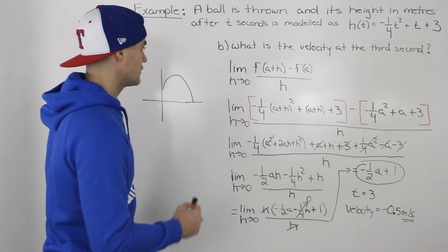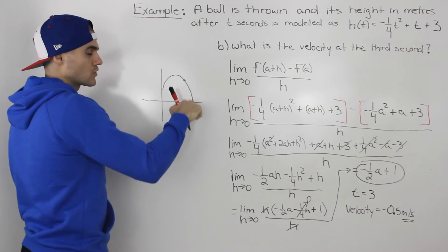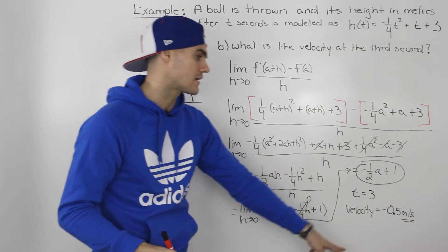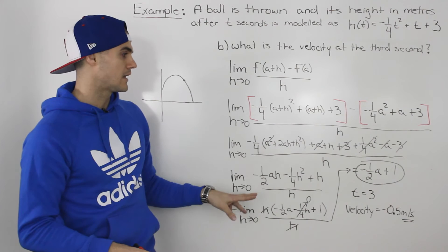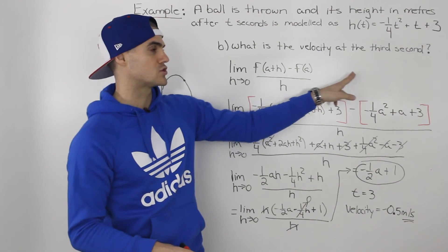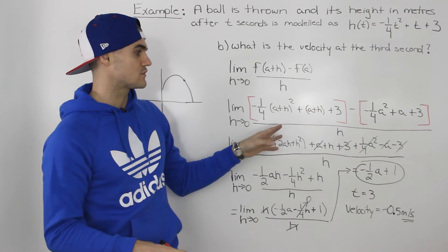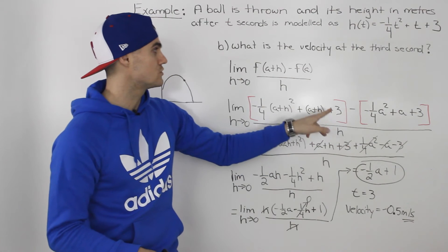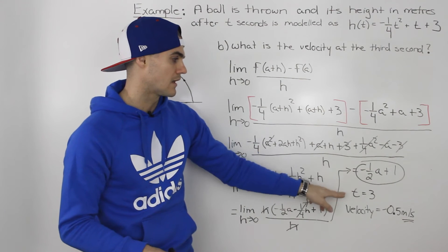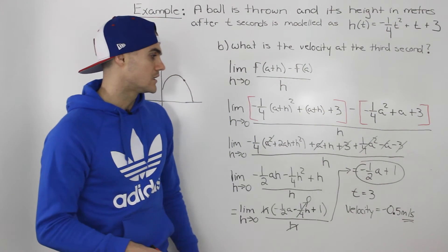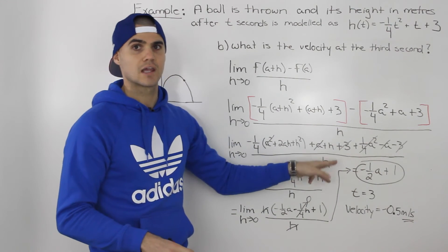The velocity at a time value of three is negative 0.5 meters per second. The reason it's negative is because at three seconds the ball is already going down towards the ground — it is losing height. The biggest takeaway from this part is the two choices available: use a specific t value of three, or find a general equation and then plug in three for a. It's better to find the general equation because we can reuse it in part c.